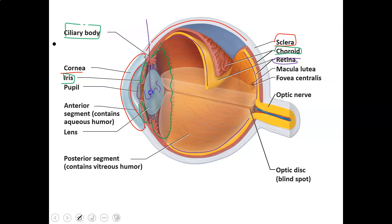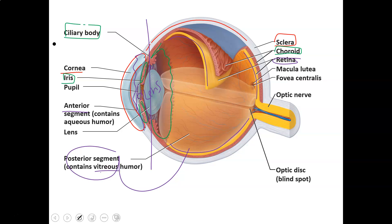The lens separates the eye into the anterior segment in the front and the posterior segment behind the lens. Each has different fluids. The anterior segment is filled with aqueous humor, which you make more of every day — it comes in and drains out, maintaining homeostasis. The back part of the eye has vitreous humor, which is thick and sticky, like clear grape jelly.